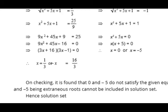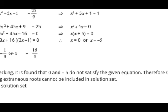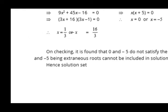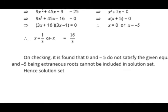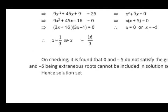On checking, we put all these values into the original equation. It is found that 0 and −5 do not satisfy the given equation; therefore 0 and −5 are extraneous roots — roots that do not satisfy the given equation. Hence the solution set is {1/3, 16/3}.